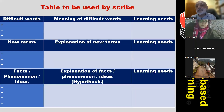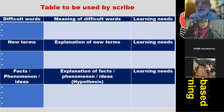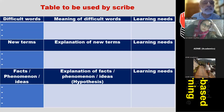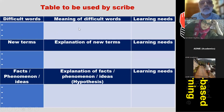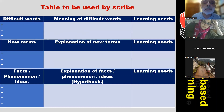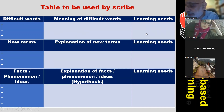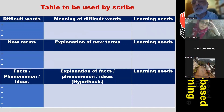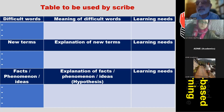This is the table which students use during the session, filled in by the scribe. First, they identify the difficult words and find out their meanings, using a dictionary or the internet, and students may help each other. In this process they might also identify learning needs, which may differ from student to student.